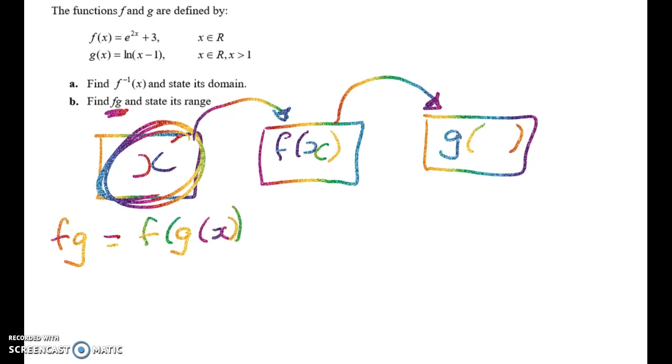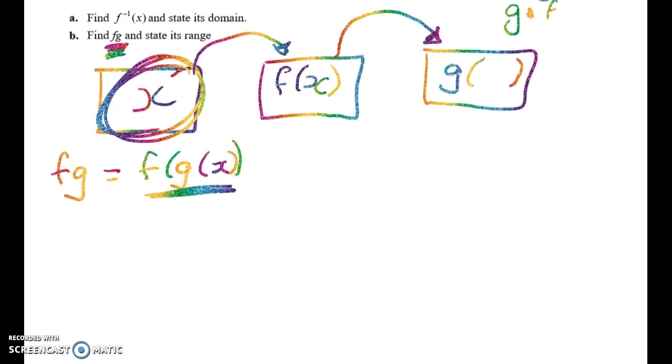Right. So fg is equal to f of g of x. Right. Now sometimes, especially if you're doing the Math 199 course, you're probably going to see this notation. Right. So I'm not going to talk about that today because I don't want this video to get too long. But if you've just got the fg notation, it's just as simple as doing this.